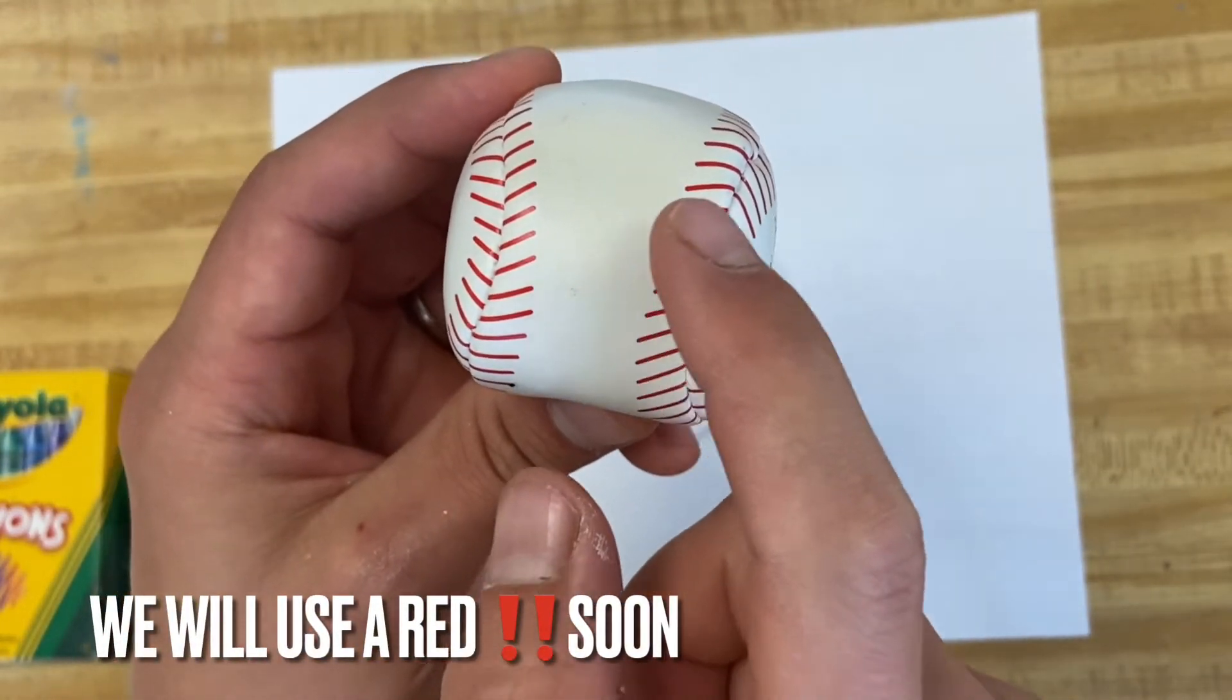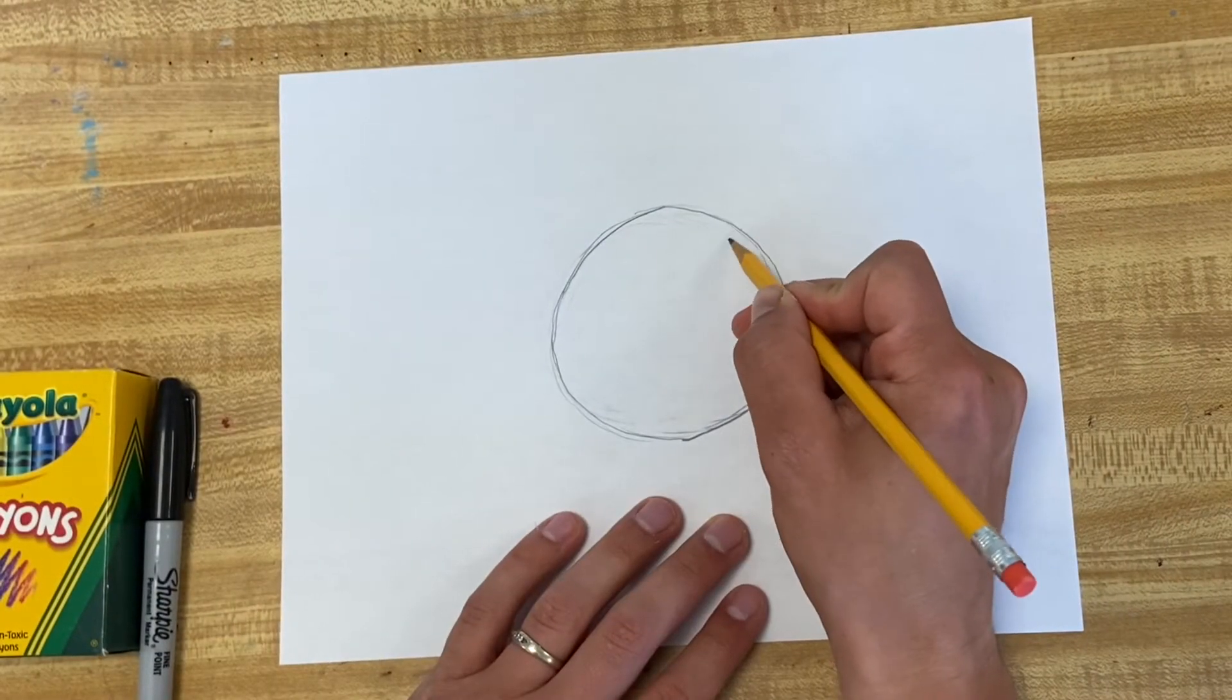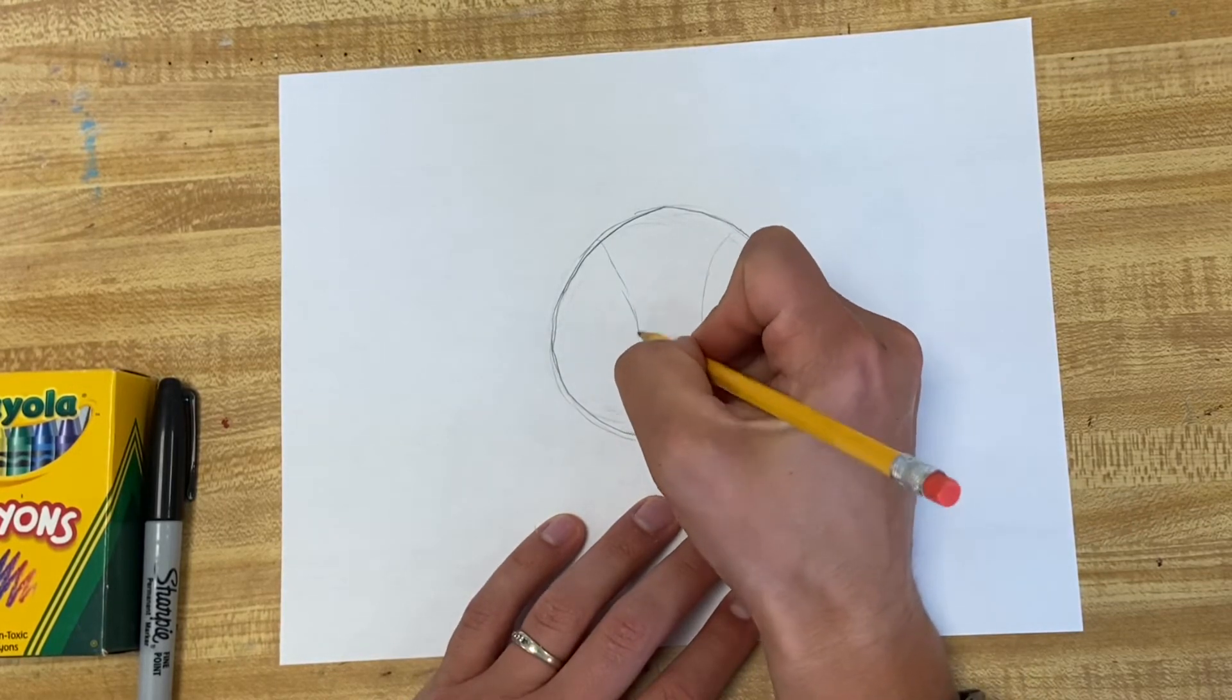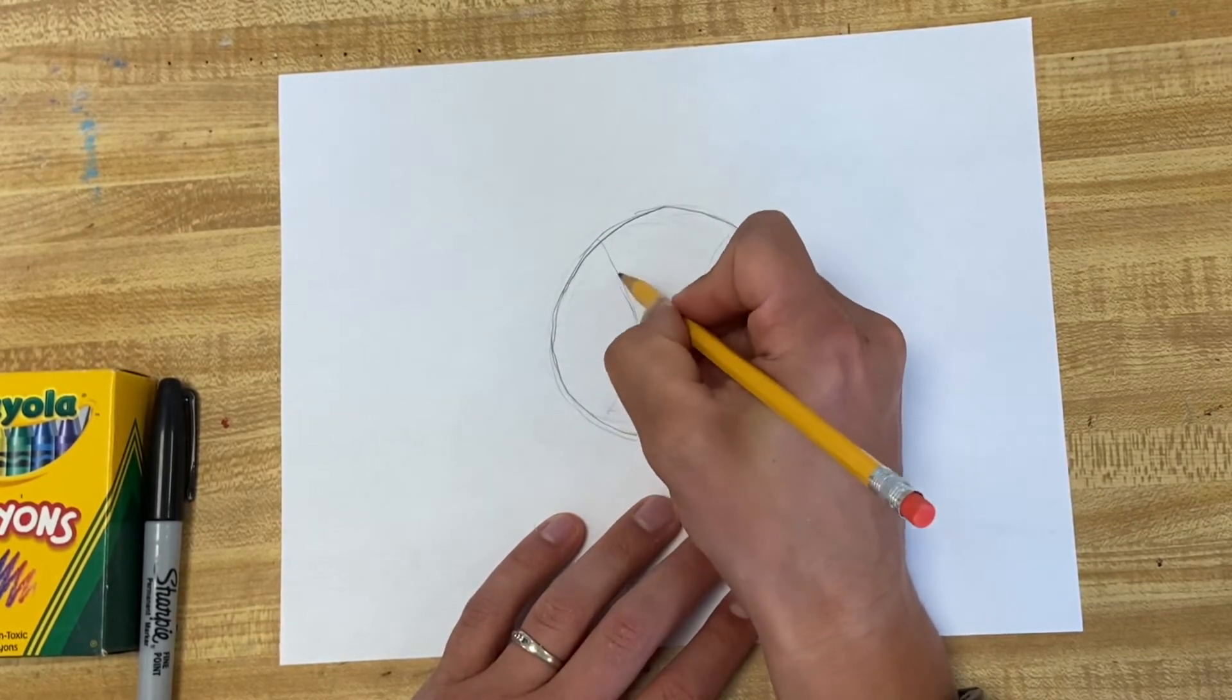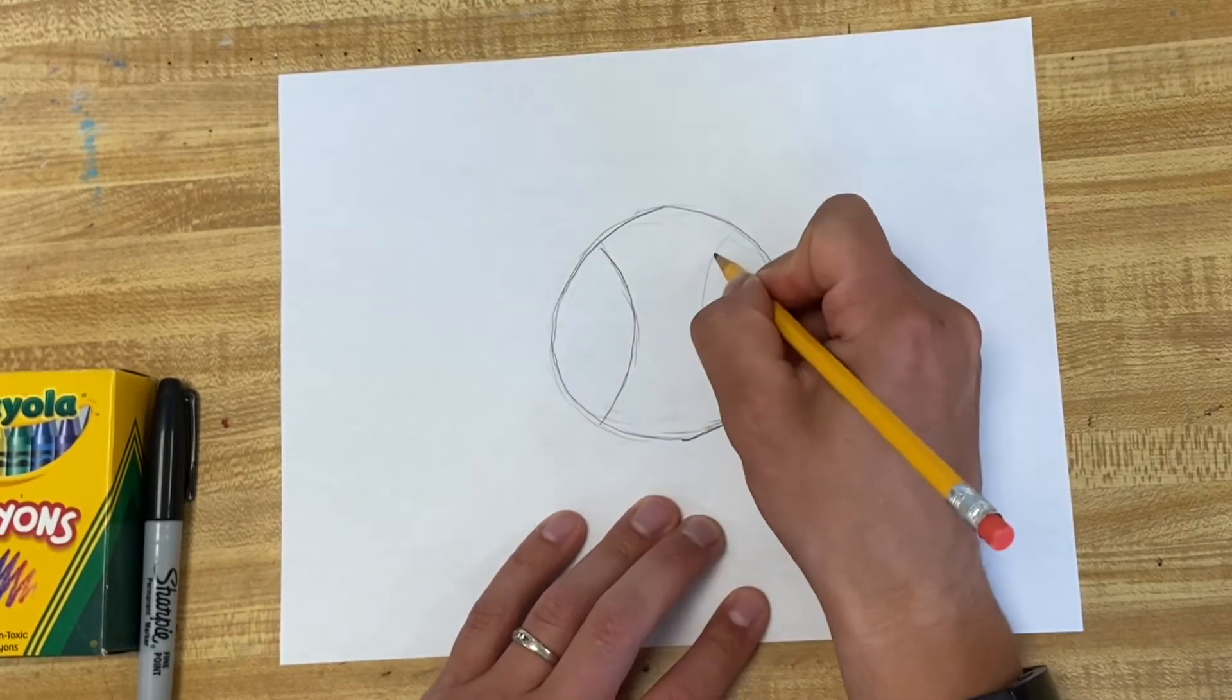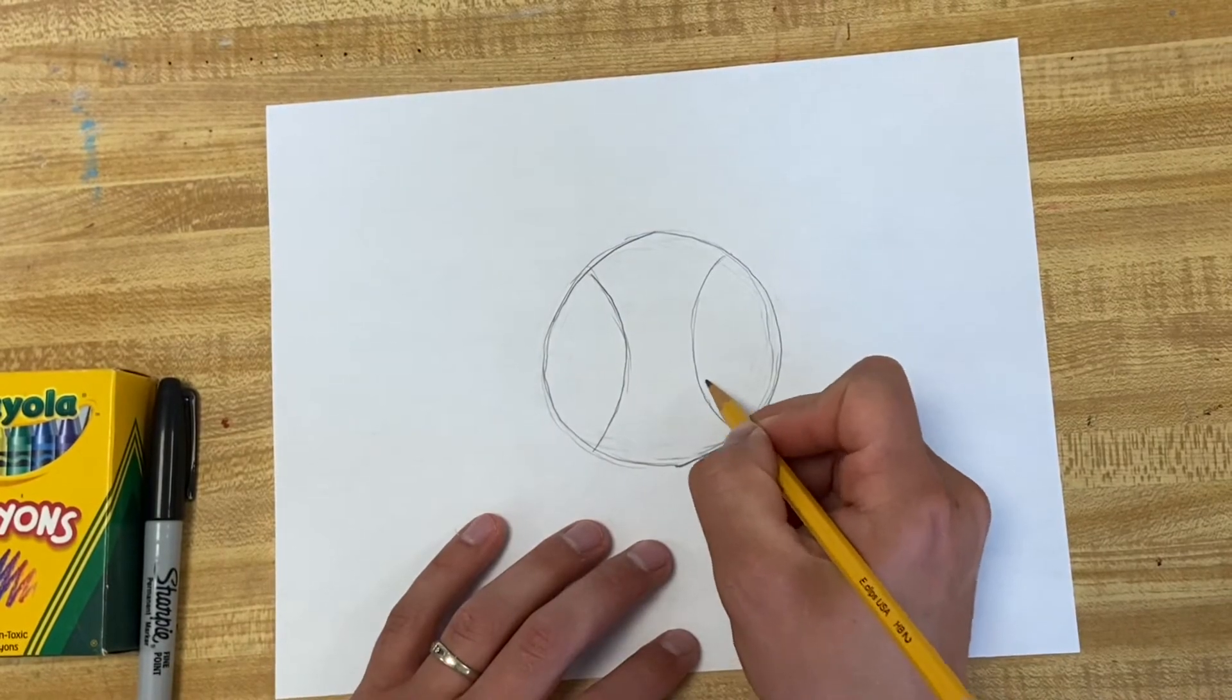And then these little dash lines back and forth. A curvy line on one side and a curvy line about even on the other side. Make that a little darker. Like that. I'm going to go over this in Sharpie, and I'm actually going to wait to do the dash lines with my red.